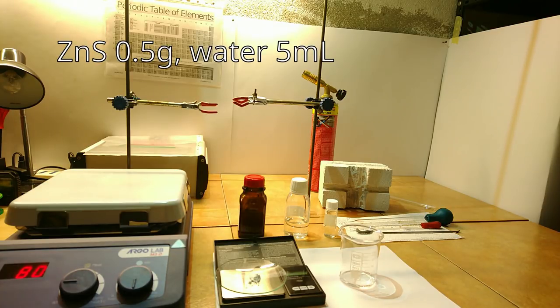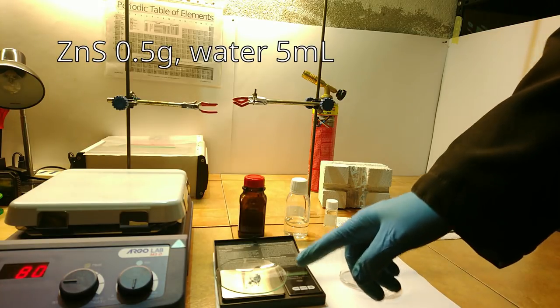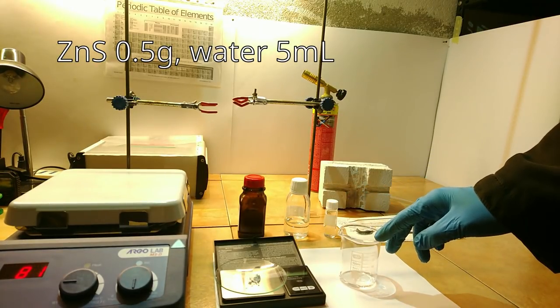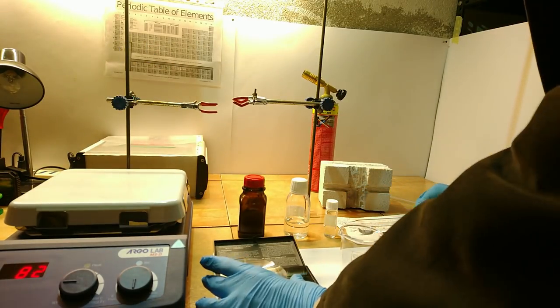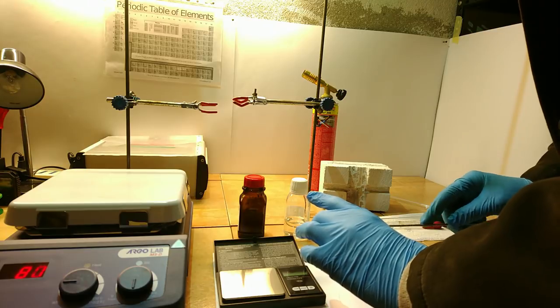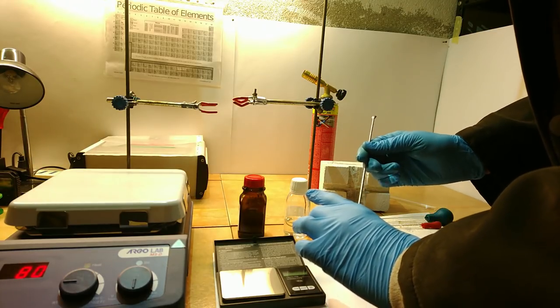To start, you need to make a slurry with half a gram of zinc sulfide and 5 milliliters of distilled water. Purity is key, as even a few parts per million of elements such as iron would destroy the glow.